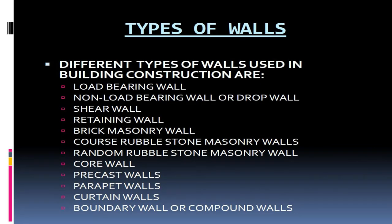Different types of walls used in building construction are: load-bearing wall, non-load-bearing wall or drop wall, shear wall, retaining wall, brick masonry wall, coarse rubble stone masonry wall, random rubble stone masonry wall, core wall, precast walls, parapet walls, curtain walls, and boundary wall or compound walls.